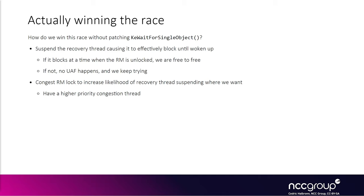In order to maximize success for winning the race condition, we want to be able to congest the mutex that this API call is trying to block on, which is the resource manager mutex. There is a trick on Windows: if a thread in the Windows kernel is blocked on something like a mutex and you request from userland that this thread is suspended, the thread will basically enter a suspended state while it's blocked on whatever it was waiting for, until you explicitly wake it back up.